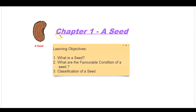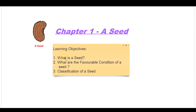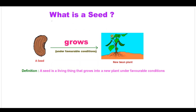So the first chapter is about a seed. This is the diagram of a seed. In this chapter, you are going to learn about what is a seed, what are the favorable conditions of a seed, and third, the classification of a seed. So let's go with our first topic — what is a seed?